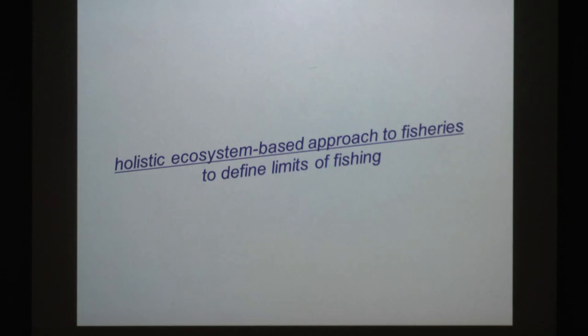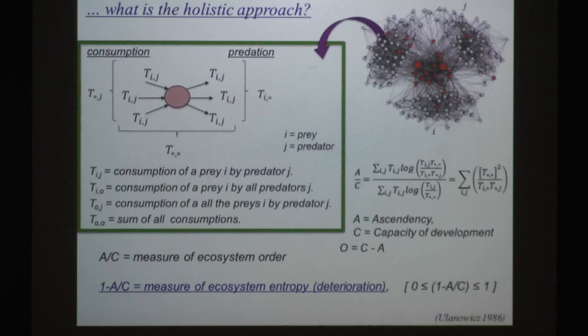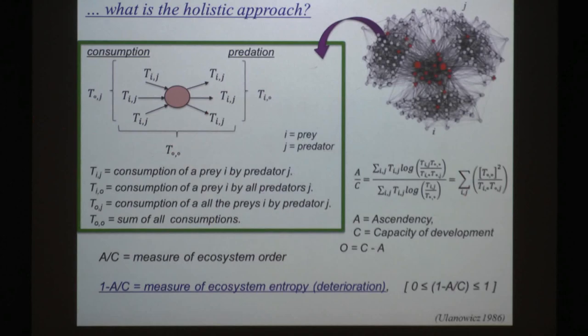What about the holistic ecosystem-based approach? We usually use trophic models — traffic models — and compute the energy that flows between prey and predators. It is really easy to compute. If we construct the trophic network, it's really easy to calculate the flows.